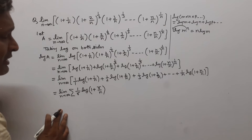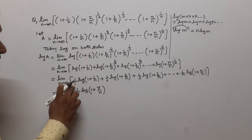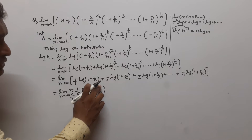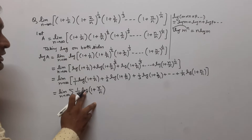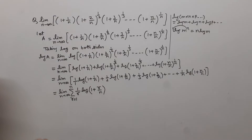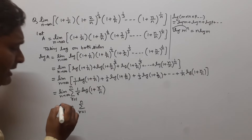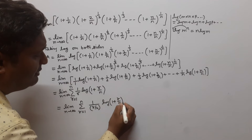Now we write this using sigma notation. Taking the limit, when r = 1 we get the first term (1/1)·log(1 + 1/n); when r = 2 we get (1/2)·log(1 + 2/n); when r = 3 we get (1/3)·log(1 + 3/n); and when r = n we get (1/n)·log(1 + n/n). So log a = Σ(r=1 to n) of (1/r)·log(1 + r/n). This can also be written as Σ(r=1 to n) of (r/n)·log(1 + r/n)·(1/n), since 1/r divided by n cancels with n.